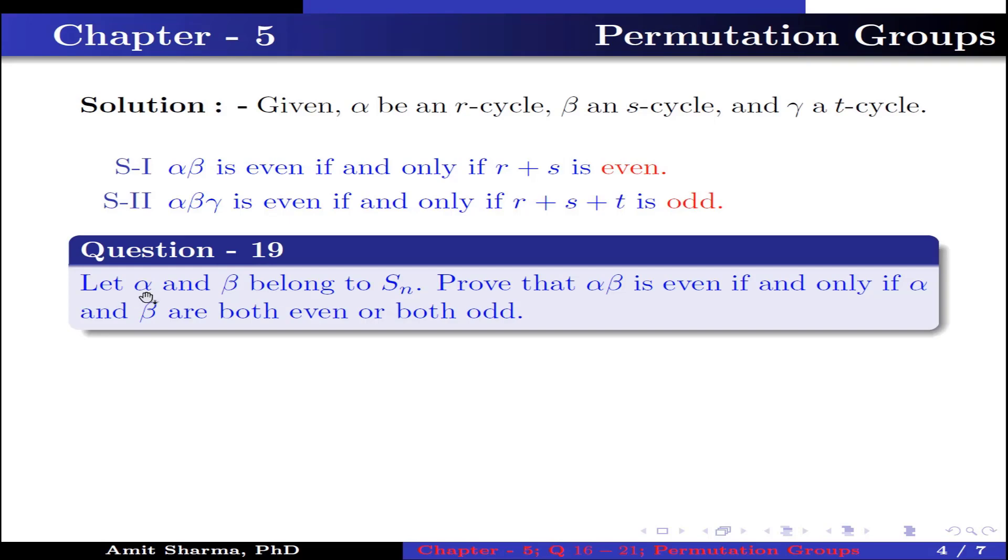Question number 19. Let α, β belong to Sₙ. Prove that αβ is even if and only if α and β both are even or both are odd.